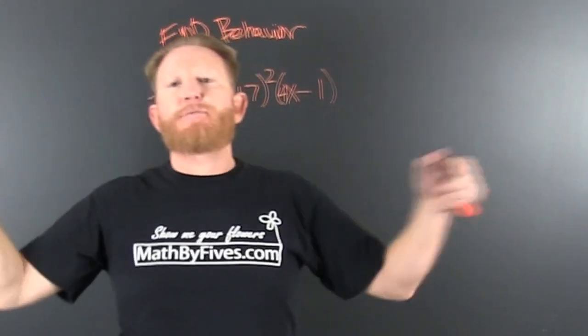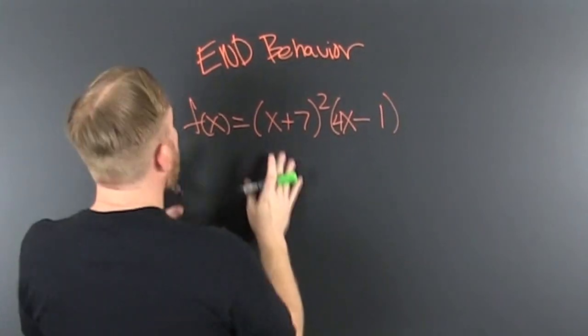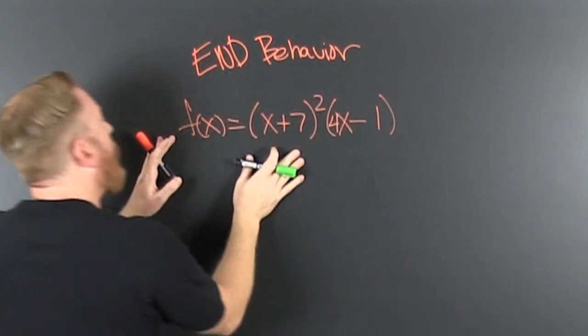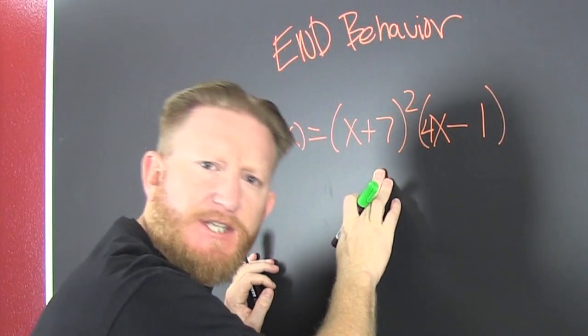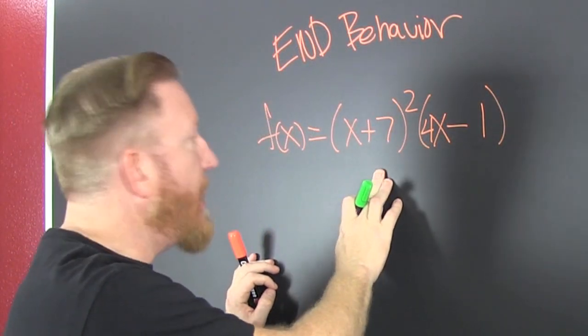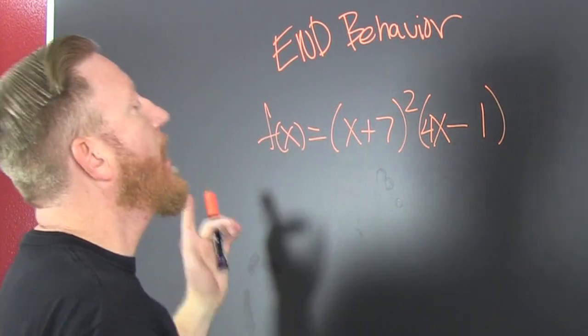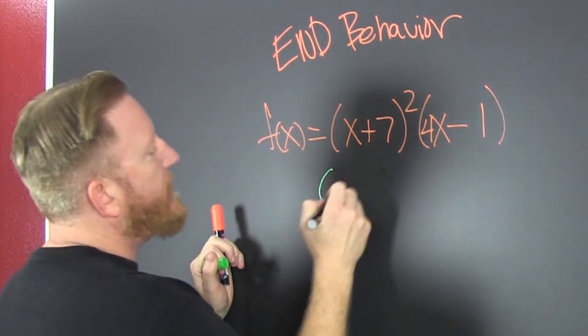Oh boy, we're talking about some end behavior. Before I end this video we need to look at that. Oh boy, can you see that? When we're looking at end behavior we're looking at the leading term of the polynomial. So what would we do?